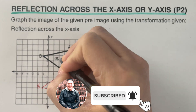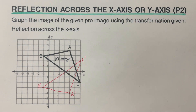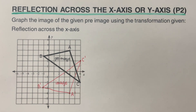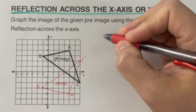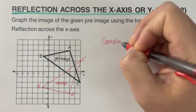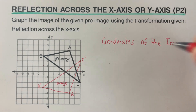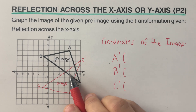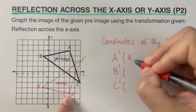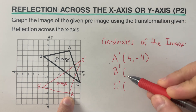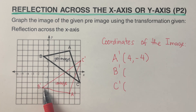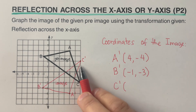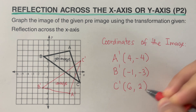So these are the vertices for the image. Again, pre-image means the original picture, and the red one is our image — the new or transformed picture. Now let's look at the coordinates for the image. A prime is sitting at (4, -4), B prime is sitting at (-1, -3), and C prime is sitting at (6, 2).